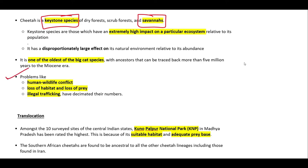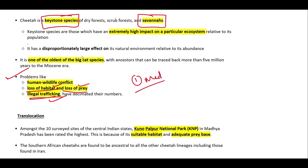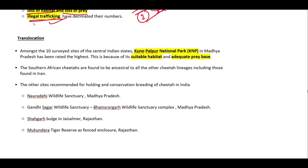There are several problems responsible for the very low number of cheetahs in the world. First is human-wildlife conflict — cheetahs have no intention to hurt humans, but habitat encroachment forces them into villages. The other main reasons are loss of habitat, loss of prey, and illegal trafficking. Cheetahs are also killed for medicinal purposes and for their skin.